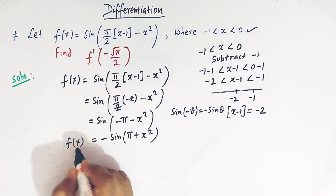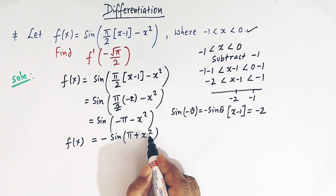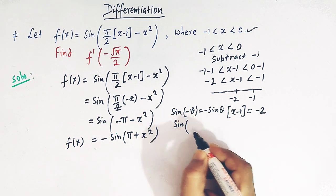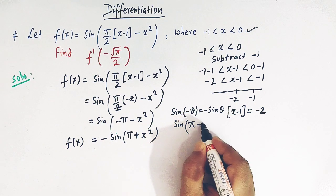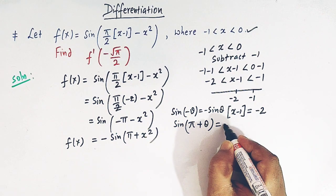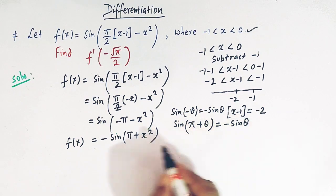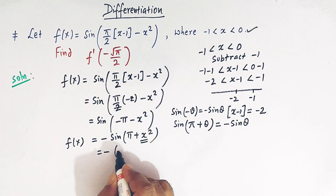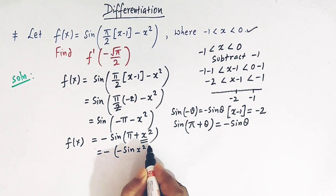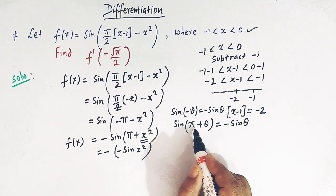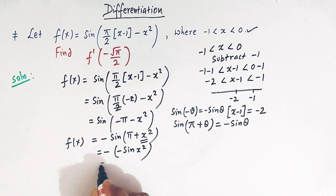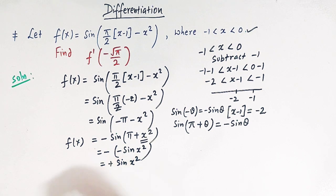So f of x equals minus sin of pi plus x squared. Now we apply another trigonometric result: sin of pi plus theta equals minus sin theta. Here theta is x squared, so we get minus times minus sin x squared. Negative times negative is positive, so f of x simplifies to sin x squared.